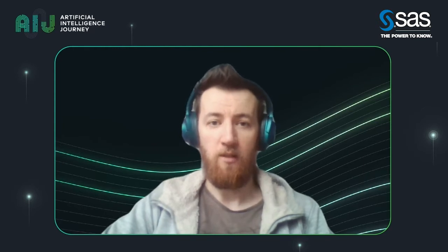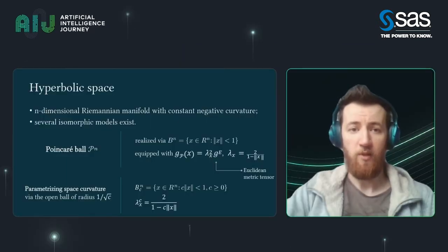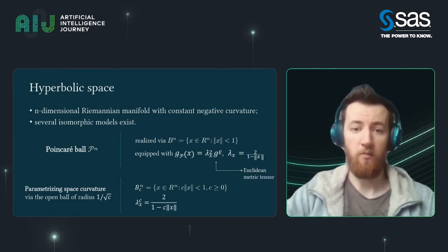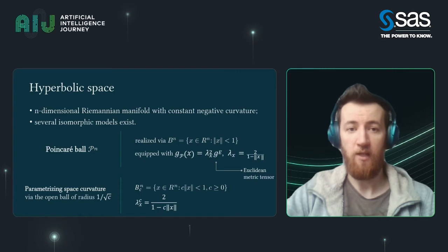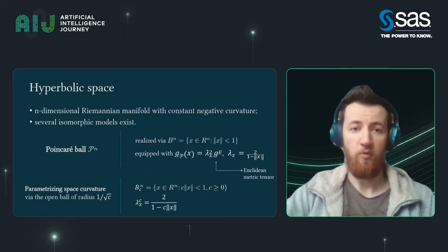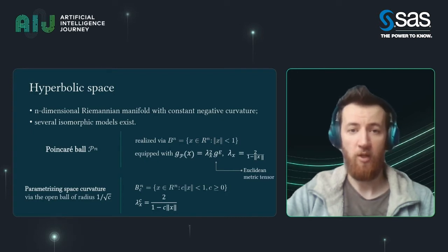Before I begin, I need to introduce some formal terms. Hyperbolic space is an n-dimensional Riemannian manifold with constant negative curvature that produces a whole range of useful qualities. There are several models; they're all isomorphic, meaning you can switch between them, mostly for convenience. The main model we will use in this report is the Poincaré-Bowell model.